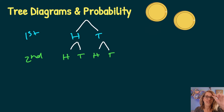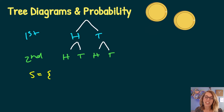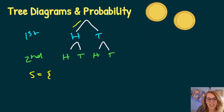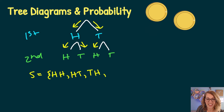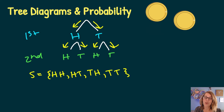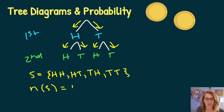This gives me my sample space, and I can follow my branches through to figure out all of my possible outcomes. I'll let S be my sample space. Following the branches: heads then heads, heads then tails, tails then heads, and tails then tails. We can see that there are four outcomes, so the number in the sample space is equal to four.